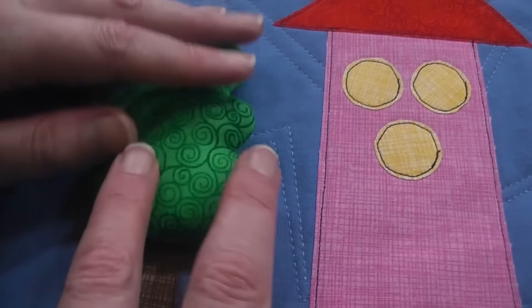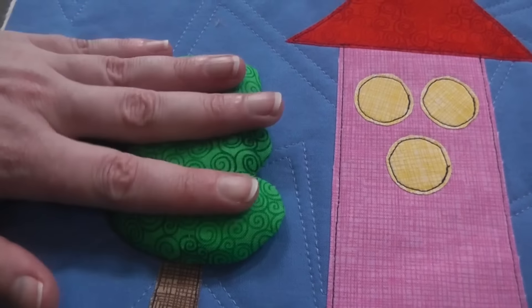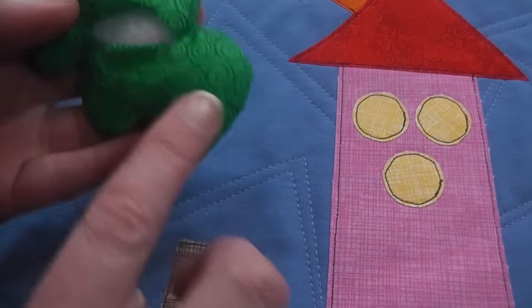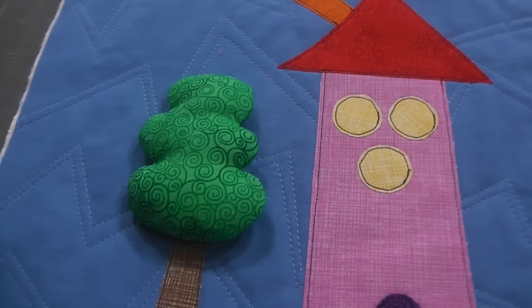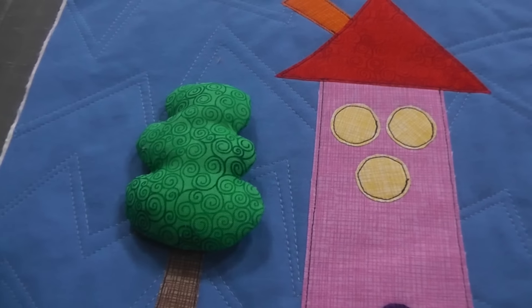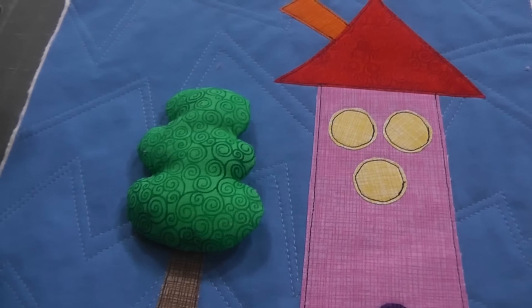So that's what we're going to do next. Now you could stick this down with some glue, you could just put a swipe of fabric glue on the back, but I'm not going to worry about that. I'm just going to put it where it looks nice on the tree trunk and take it back over to the machine and show you how to sew that down.